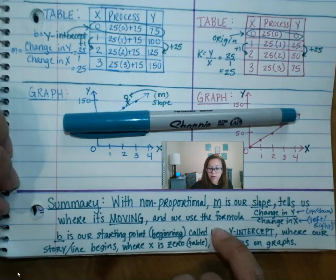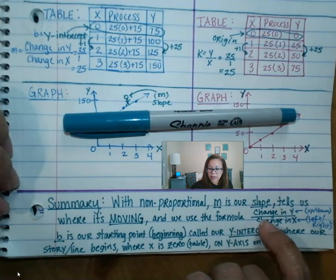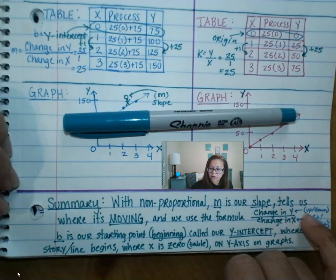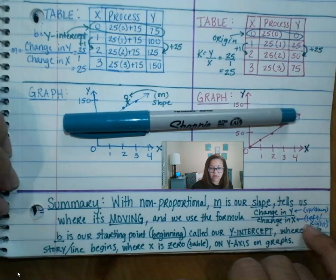We use the formula for our slope, change in Y over change in X, or change in Y divided by change in X. Our Y is always our up and down. Our X is always our left or right.